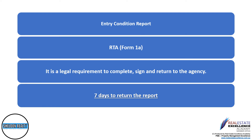The Form 1A is the Entry Condition Report. It is a legal requirement for you to complete, sign, and return the Form 1A to our agency within seven days of taking possession. You're given a copy of the Form 1A completed and signed by our agency on or before the day you take possession — usually the day you collect the keys. During your legal time period to complete and return the Form 1A, if you have any questions or concerns, please contact our property manager and return the report within the seven days set out in the legislation.